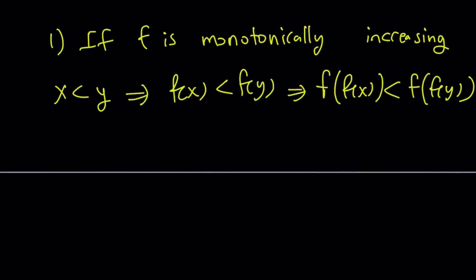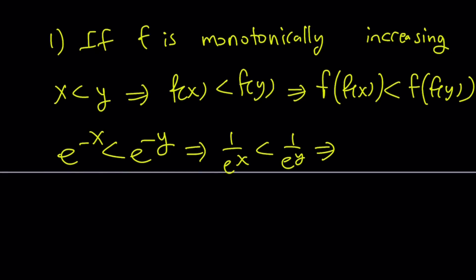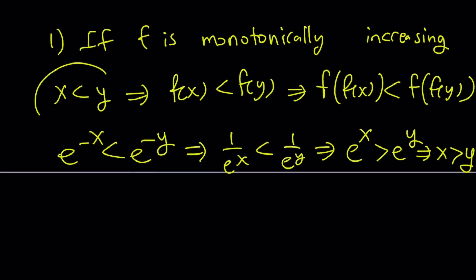We know what f of f of x is, so we can replace it: e to the power negative x is less than e to the power negative y. When you reverse the process, e to the power negative x is 1 over e to the x, and taking reciprocals reverses the order, so e to the x is greater than e to the y. Since e to the power x is monotonically increasing, this implies x is greater than y. But we started with x less than y — that's a contradiction. So f cannot be monotonically increasing.